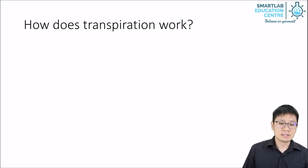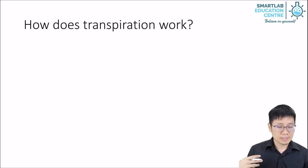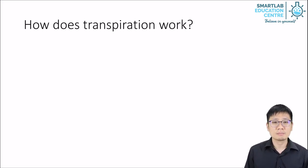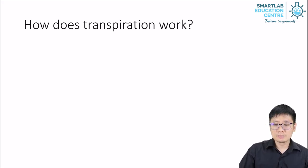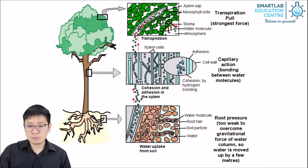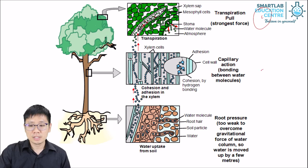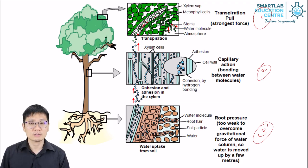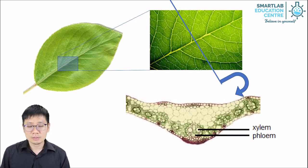Now let's look at how the mechanism works, though this will be a simplified version. There are actually a few different forces that help transpiration occur. There's transpiration pull, which is the strongest one. There's capillary action, which we will not talk about. There's also root pressure, which we will also not talk about in detail. So let's focus on transpiration pull only.